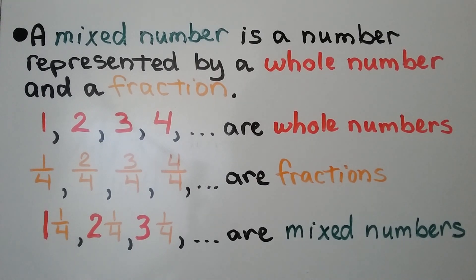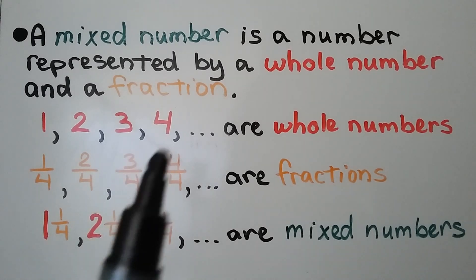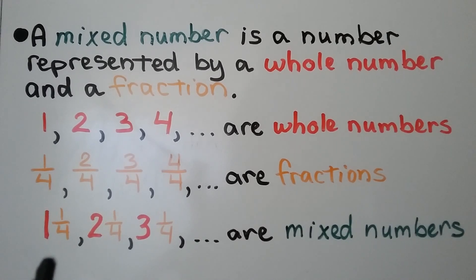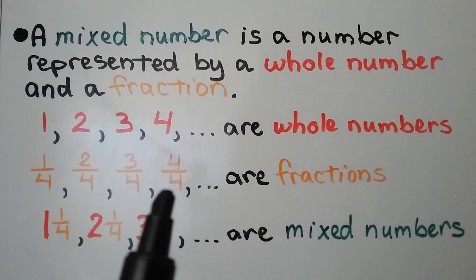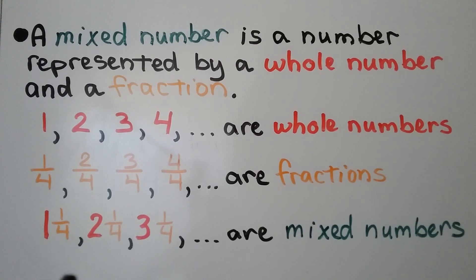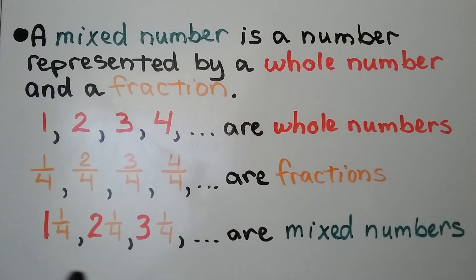Whole numbers are like one, two, three, four, and the fractions are one fourth, two fourths, three fourths, four fourths, and we put them together — a whole number and a fraction. We have mixed numbers like one and one fourth, two and one fourth, three and one fourth.